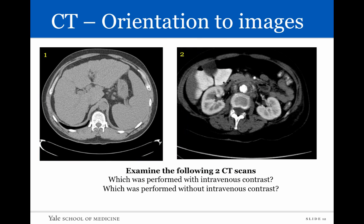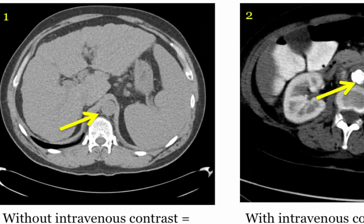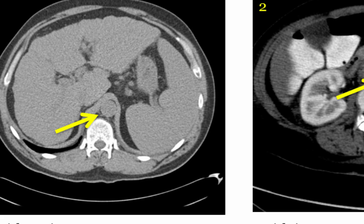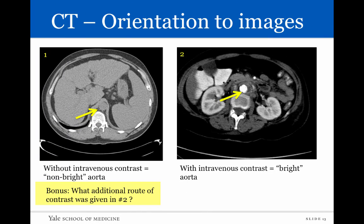Looking at these two CT scans, one patient was given intravenous contrast and one was not. The first scan is without intravenous contrast, and the second is with intravenous contrast. The aorta in the mid-portion of the non-contrast image looks exactly like the liver, spleen, or muscles — the same shade of gray. When contrast is given, it appears very bright — very white — on CT imaging. In the second scan, oral contrast was also given, which appears bright and is seen within portions of the patient's bowel.